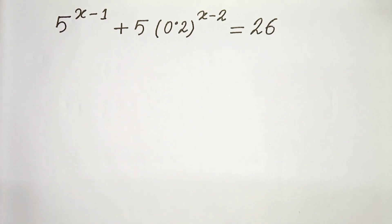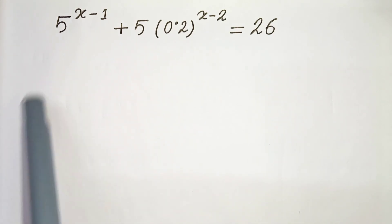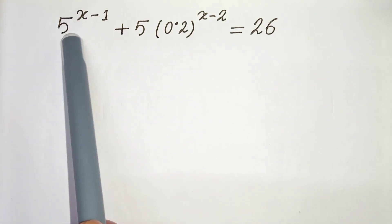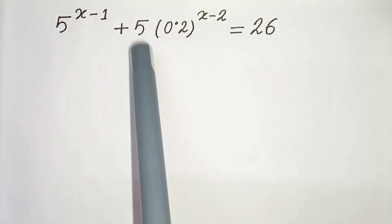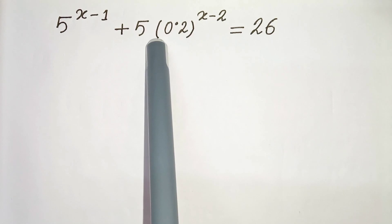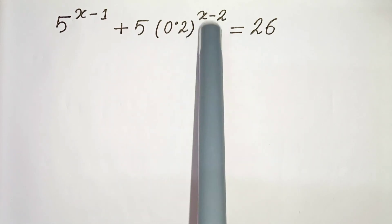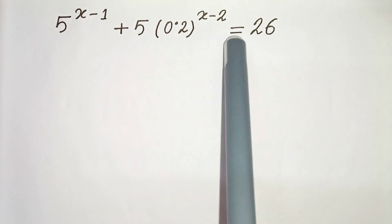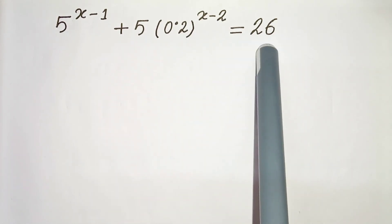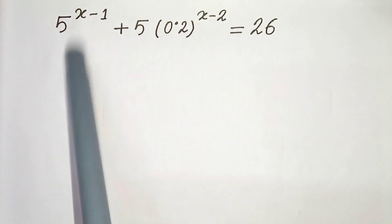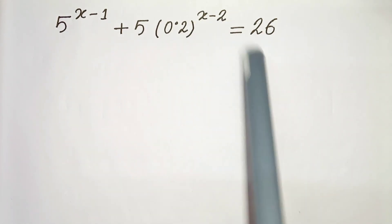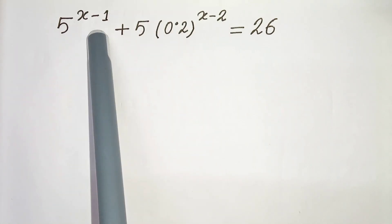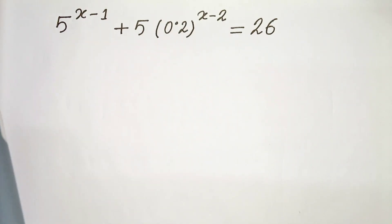Hello everyone. In this video we have 5 to the power x minus 1, plus 5 times 0.2 to the power x minus 2, equals to 26. We have to solve this and find the value of x. So let's start.